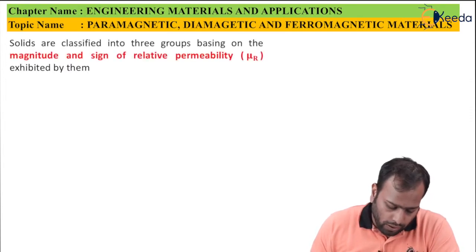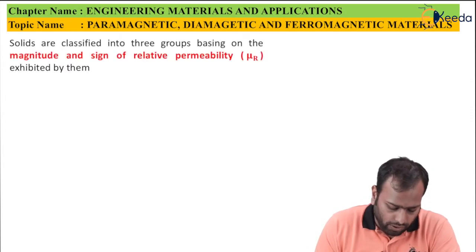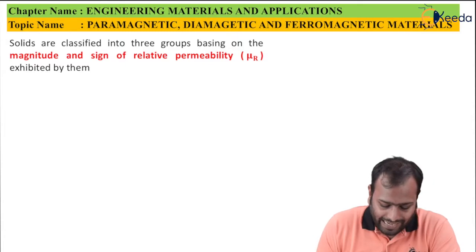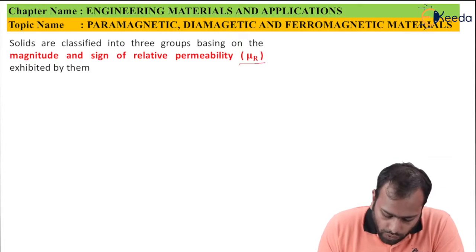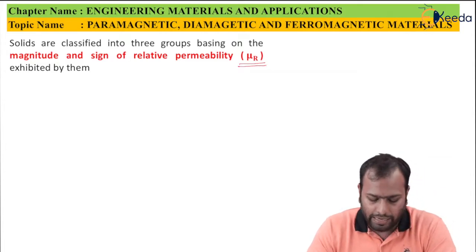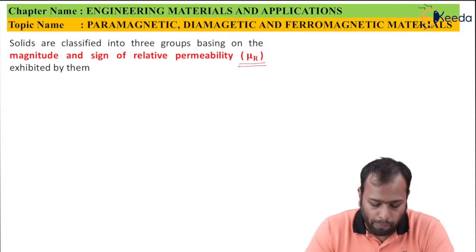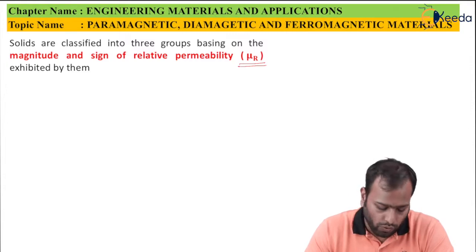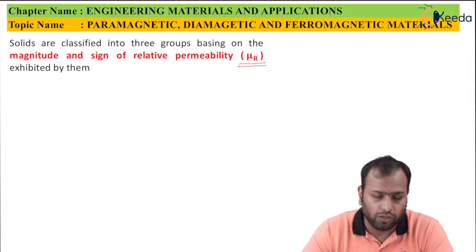Solids are classified into three groups based on their magnitude and sign of relative permeability, that is μr. You have heard about μr, that is relative permeability, in class 12. This relative permeability is the most important parameter by which we initially classify the solids.